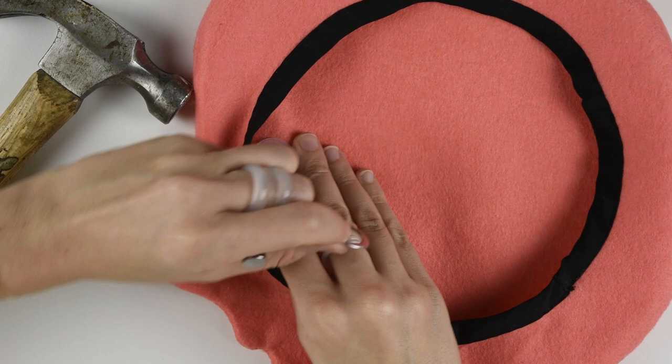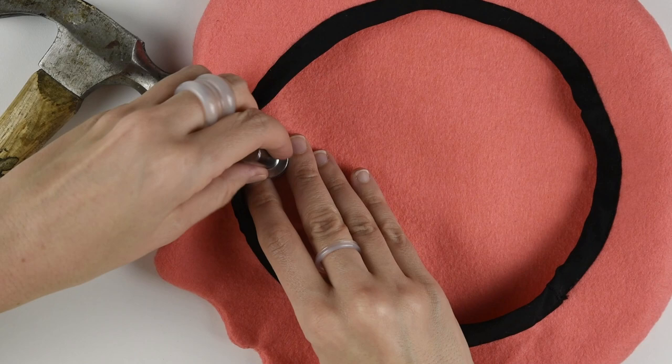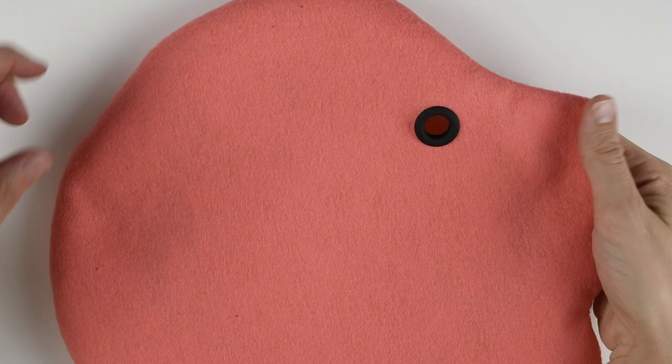Then take the setter and center it on top of the grommet and give a few steady but forceful taps. You'll know it's secured if nothing is jiggling around and the black part of the grommet has rolled down a little over onto the back side. And your beret is complete.